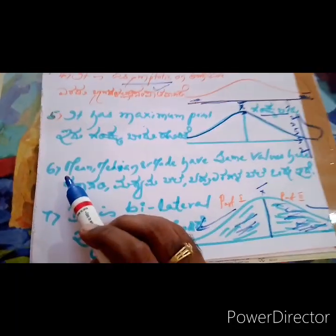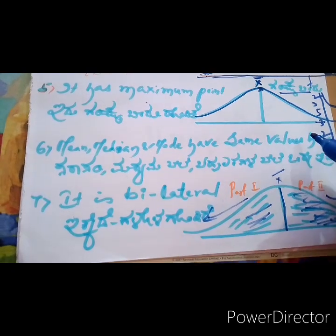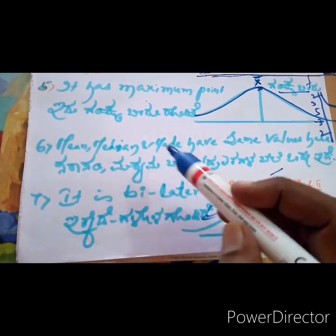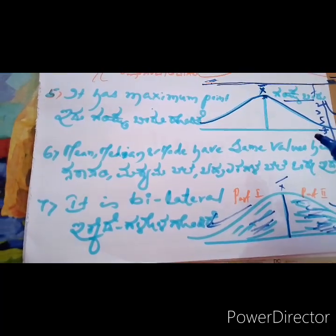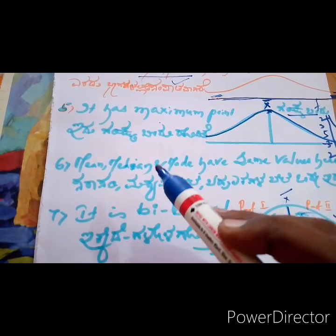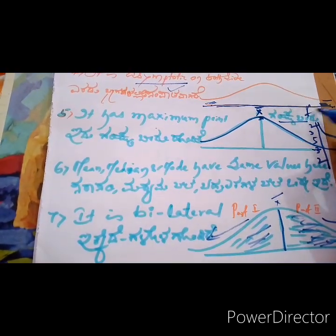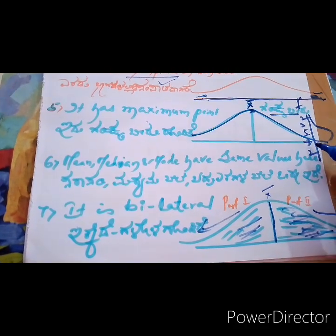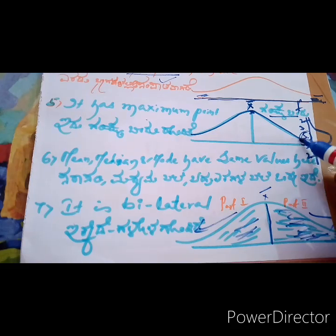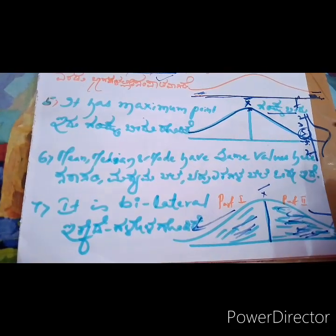Sixth one is mean, median and mode have same values here. When the mean, median, mode values are same. Suppose if you take the frequency like this: 2, 3, 5, 3, 2. See, middle one is 5, 3, 2. Middle one is 5, again 3, 2. In this case, if you plot the graph, that graph will be just like the normal probability curve.